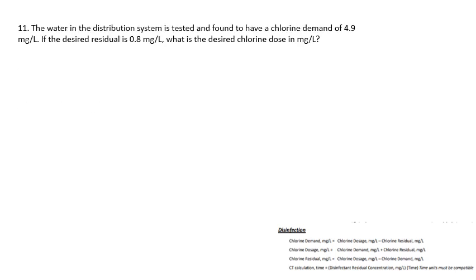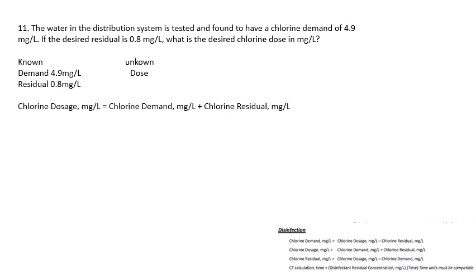Question eleven: the water in the distribution system is tested and found to have a chlorine demand of 4.9 mg/L. If the desired residual is 0.8 mg/L, what is the desired chlorine dosage? The demand will use up 4.9 mg/L and you want 0.8 mg/L left over; the unknown is the dose. Chlorine demand plus chlorine residual — 4.9 plus 0.8 — gives a chlorine dosage of 5.7 mg/L.